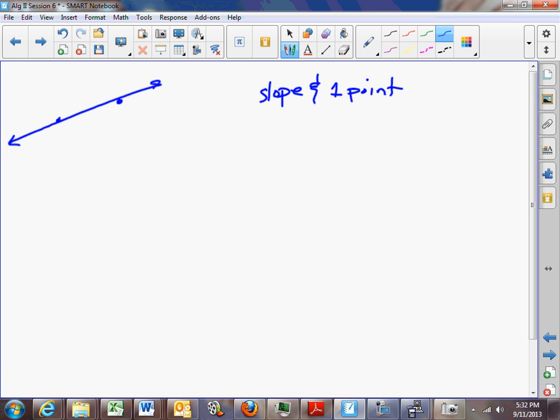that will also determine a line. So we should be able to write the equation for a line anytime we know two points, or when we know one point and the slope.